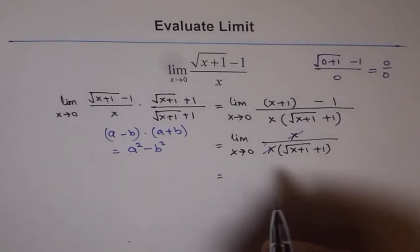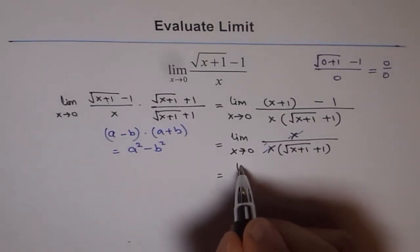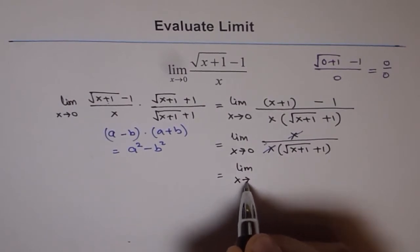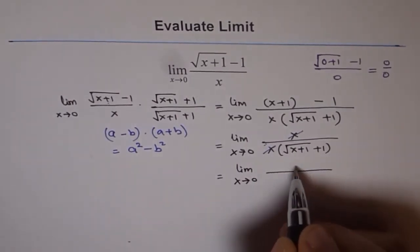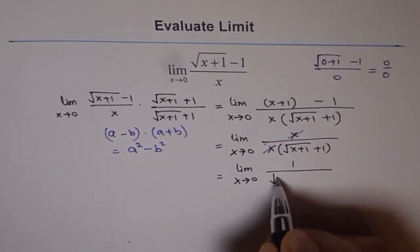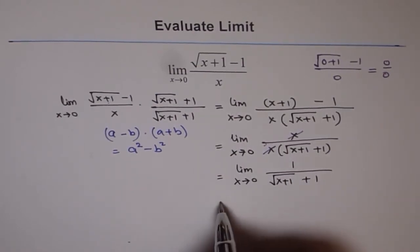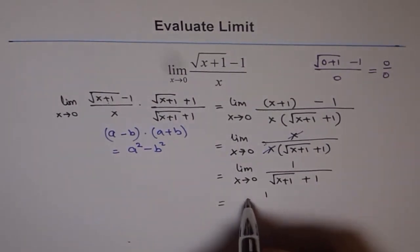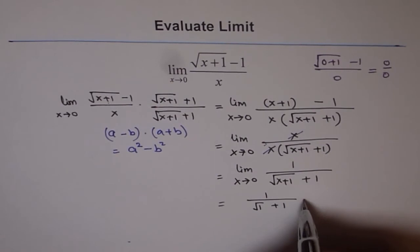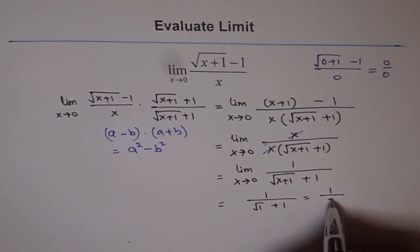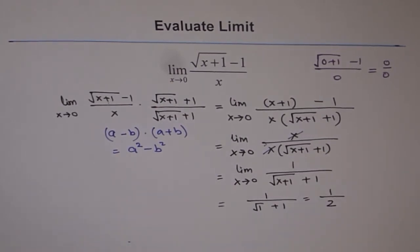As x approaches 0, the function simplifies to 1 over square root of x plus 1 plus 1. Now if you substitute 0 for x, we get 1 over square root of 1 plus 1, which is 1 over 2. So half is our answer for this limit.